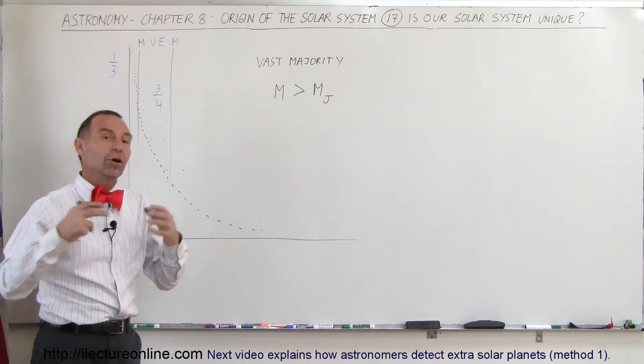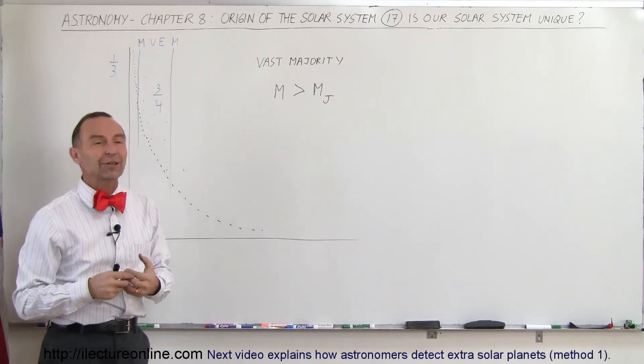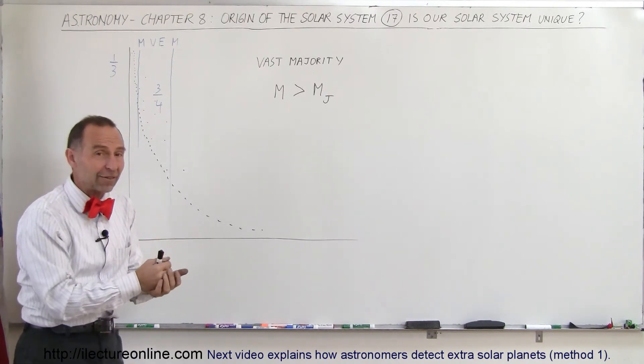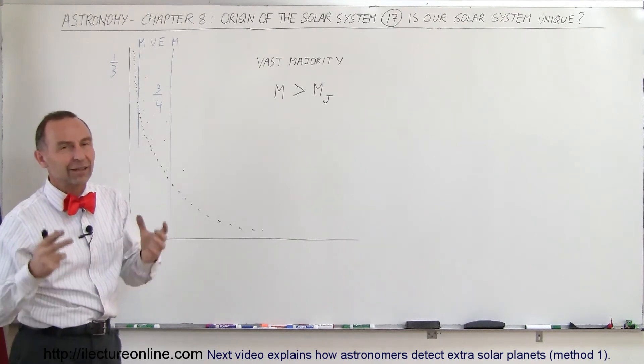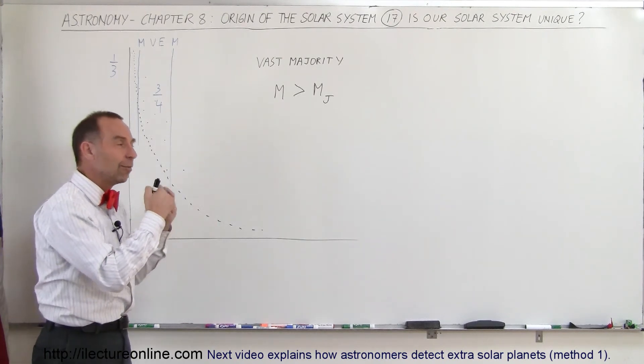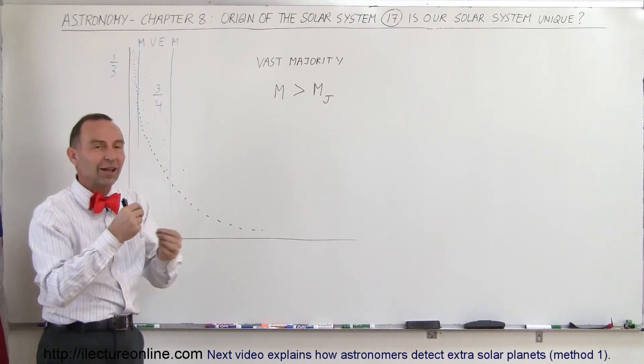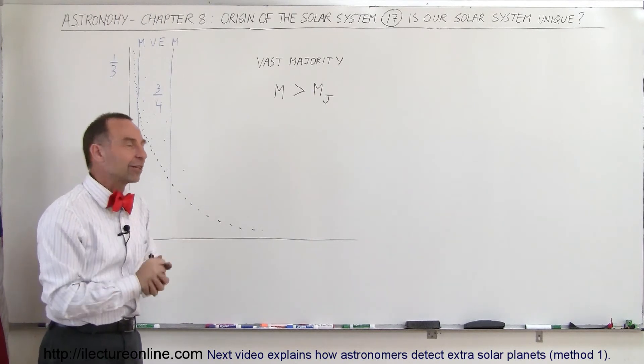But again, the larger the planet, the greater the influence on the star, the easier it is for us to detect them. And again, it may be a skewing of the actual truth that there's actually a lot of smaller planets out there. We just haven't been able to find them because they're much more difficult to detect. They're smaller. They don't block out as much light. They don't influence the planet as much. There's not a lot of wobble there in the star with the effect of the planet.